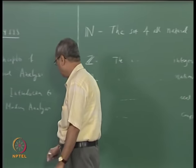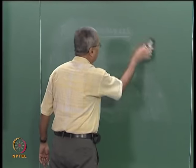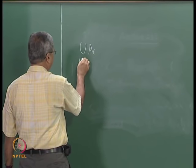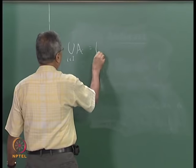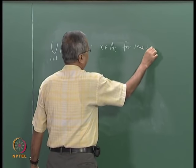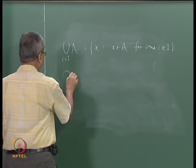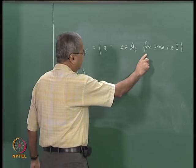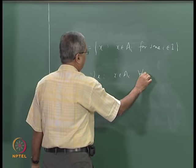We can talk about various operations on this family. The union ∪{Aᵢ : i∈ℐ} is the set of all x such that x belongs to Aᵢ for at least one i in ℐ. Similarly, the intersection ∩{Aᵢ : i∈ℐ} is the set of all x such that x belongs to Aᵢ for all i in ℐ.